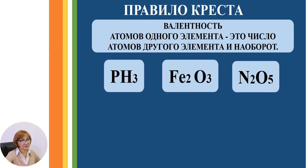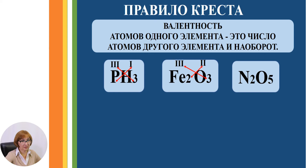Для определения валентности можно использовать правило Креста. Валентность атомов одного элемента — это число атомов другого элемента, и наоборот. Например, в веществе PH3: 1 атом фосфора и 3 атома водорода, поэтому над фосфором пишем валентность 3, а над водородом — 1. Вещество Fe2O3: индексы 2, 3, крест-накрест — над железом валентность 3, над кислородом валентность 2. N2O5: над азотом 5, над кислородом 2.